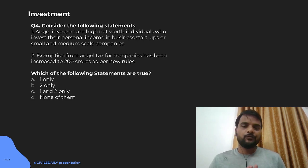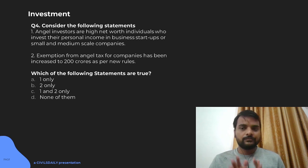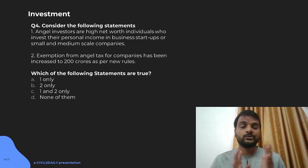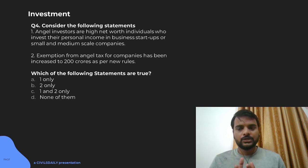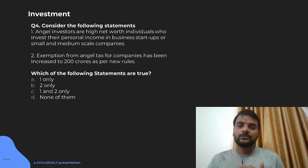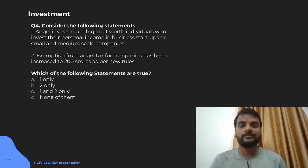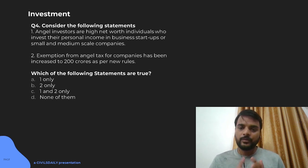Moving on to the next question: consider the following statements. Statement one — angel investors are high net worth individuals who invest their personal income in business startups or small and medium scale companies. Not all requirements of companies or startups will be fulfilled by taking loans from banks, because many times they do not have the credit history or assets to mortgage. So banks will not provide them enough money and they depend upon alternative investment schemes — one of them is angel investors. Angel investors are aptly named high net worth individuals, like tech founders or those with lots of money at disposal, who invest in promising startups for very high returns. That statement is true. Statement two — exemption from angel tax for companies has been increased to 200 crore — that is not true.